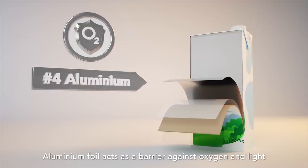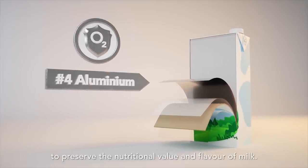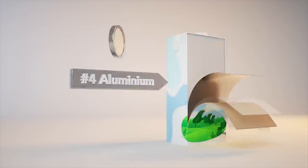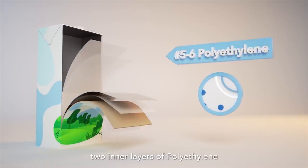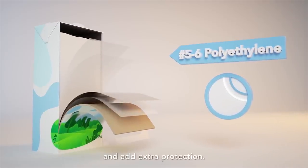Aluminium foil acts as a barrier against oxygen and light to preserve the nutritional value and flavour of milk. And finally, two inner layers of polyethylene separate the milk from the aluminium and add extra protection.